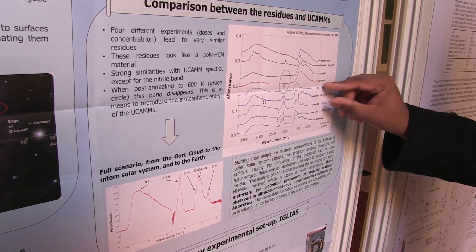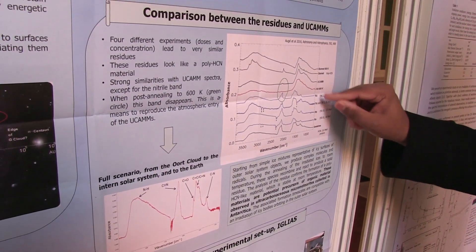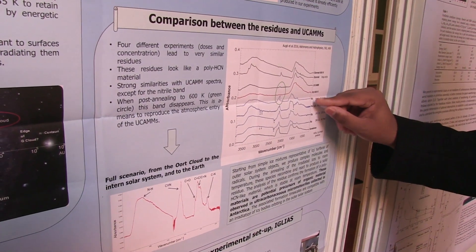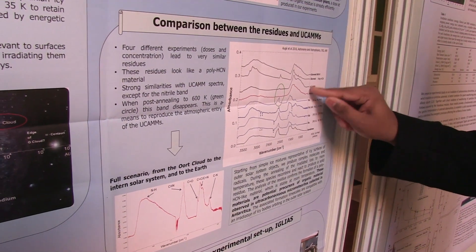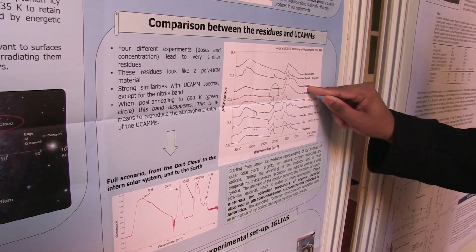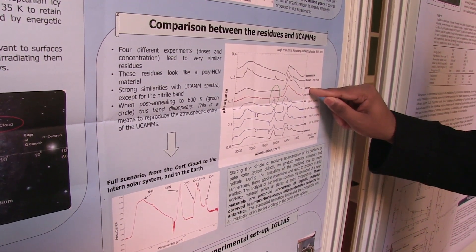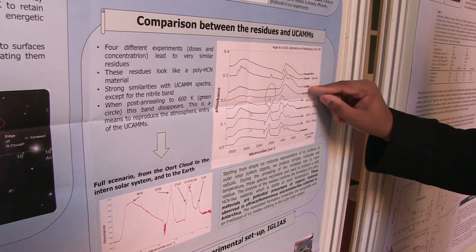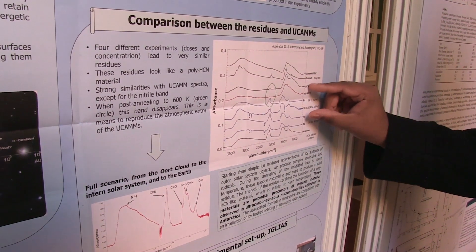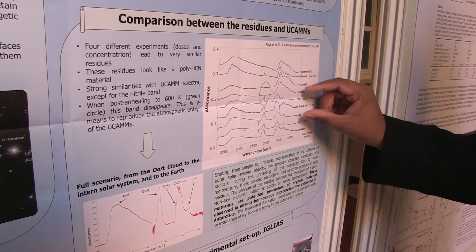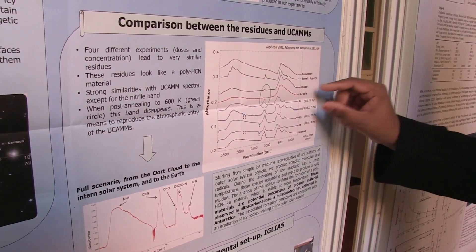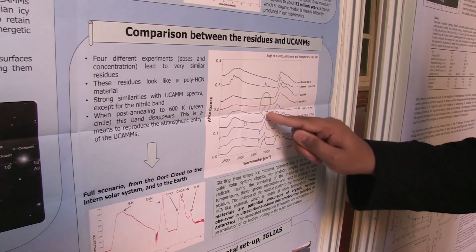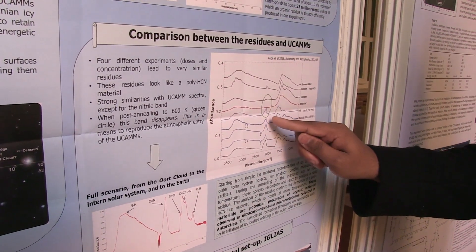The most important thing was to compare this infrared spectra from the different residues we obtained with the UCAM one. UCAM stands for ultra-carbonaceous Antarctic micrometeorites. What we can see is that it is very close. The only difference remains in this band here where the green circle is.